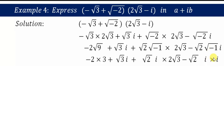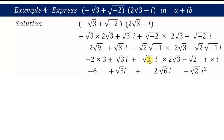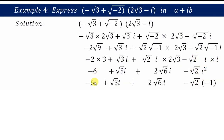√(-1) is i, so i into i. Next: -2 times 3 is -6, plus √3·i, plus — the 2 is outside the root, and the numbers inside the root, 2 and 3, multiply to give 6 — so plus 2√6·i. Then -√2·i times i gives -√2·i².